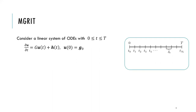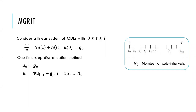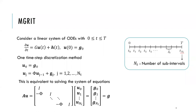Let us consider a linear system of ordinary differential equations with time t going from zero to capital T. The temporal domain is divided into N_t number of subintervals with a constant spacing delta t. A one-time step discretization method is defined by u_0 equal to g_0 at the initial time step. For time steps 1 to N_t, the approximate solution u_j is computed based on the approximate solution u_{j-1} at the previous time step, where phi is time independent. This is equivalent to solving a system of equations.